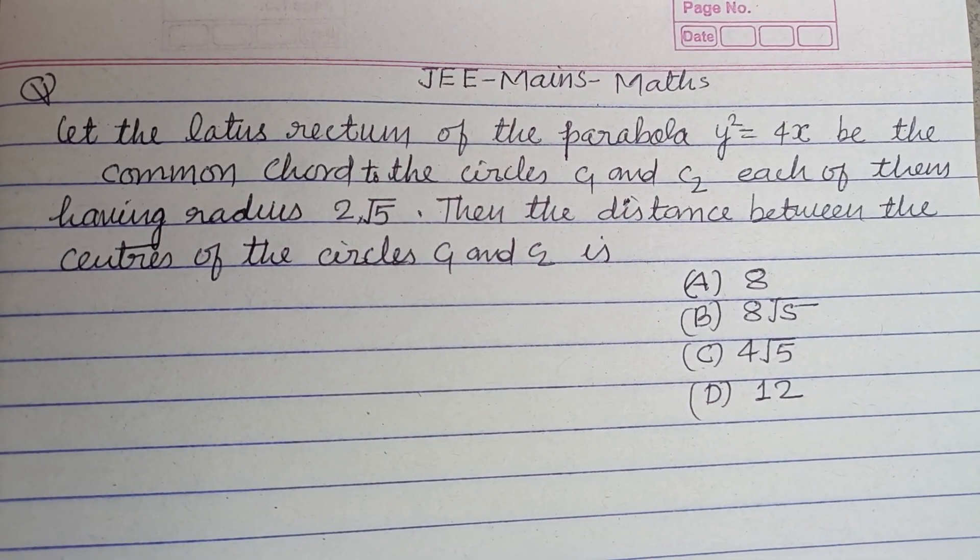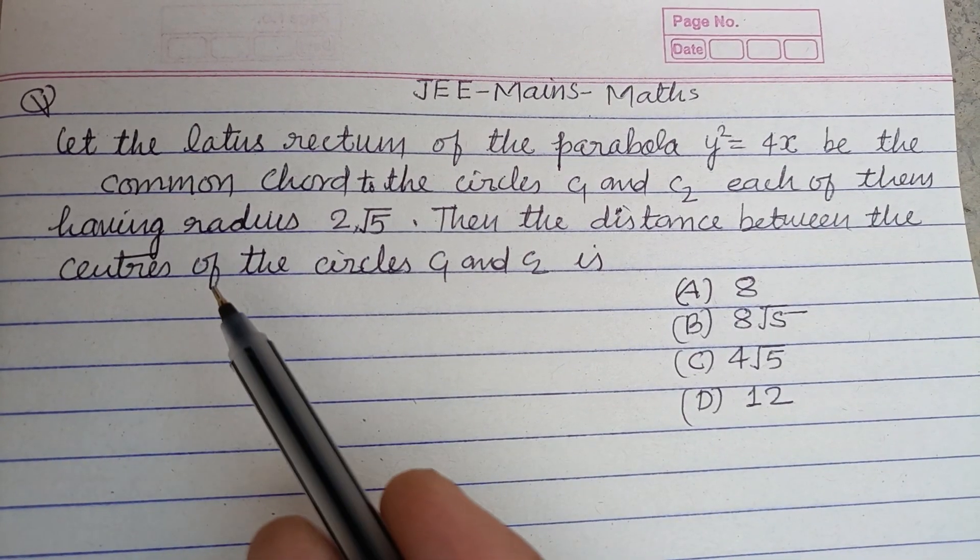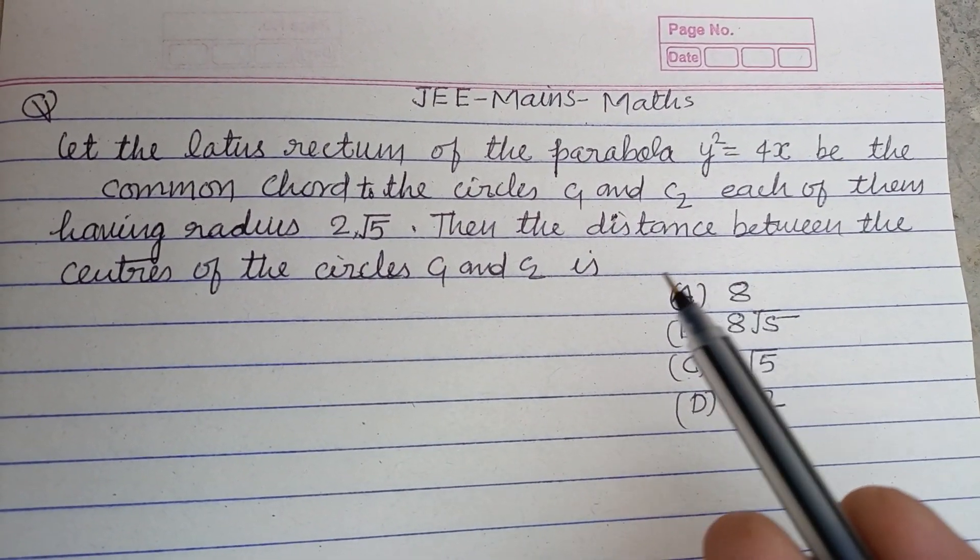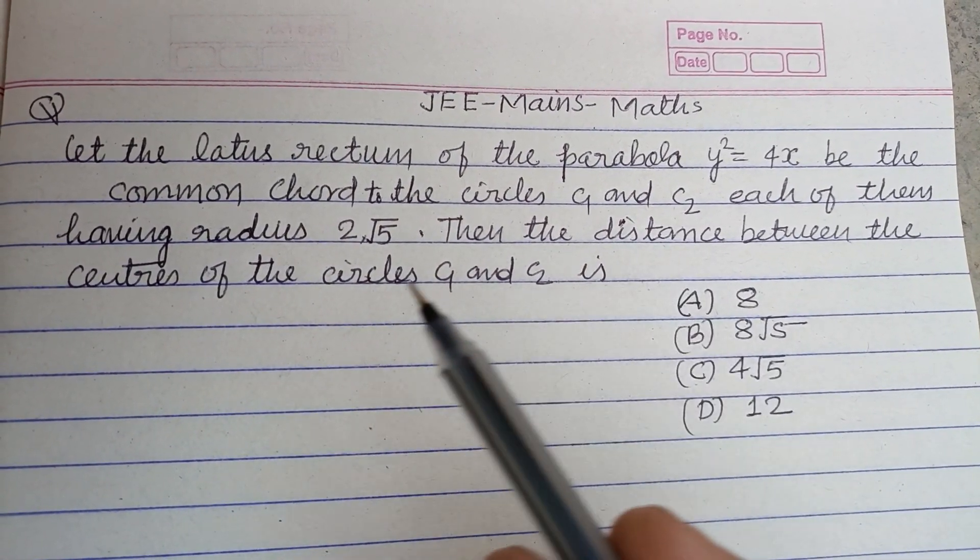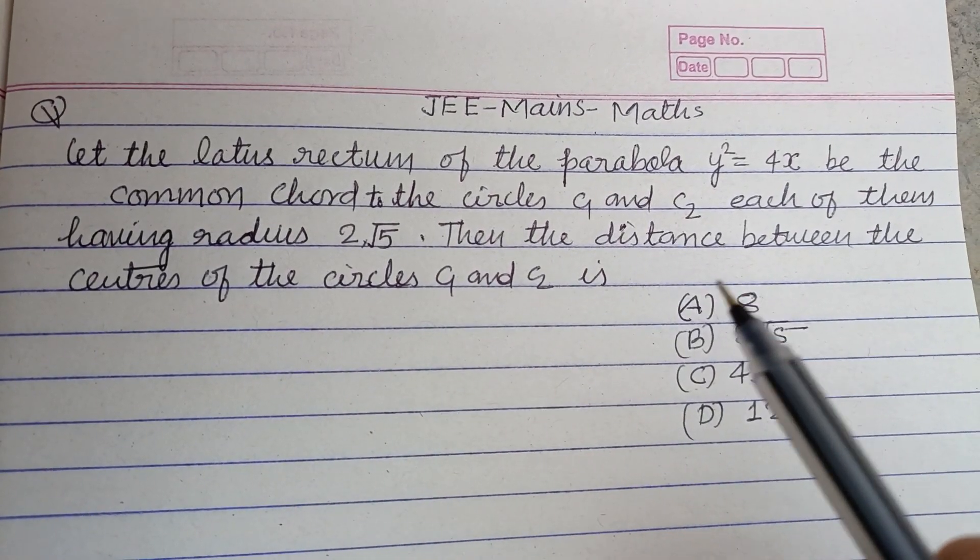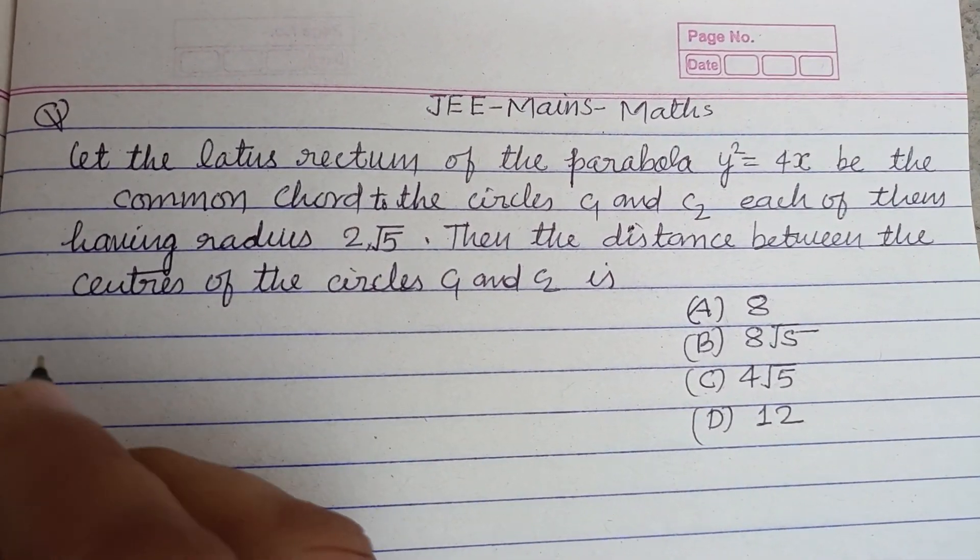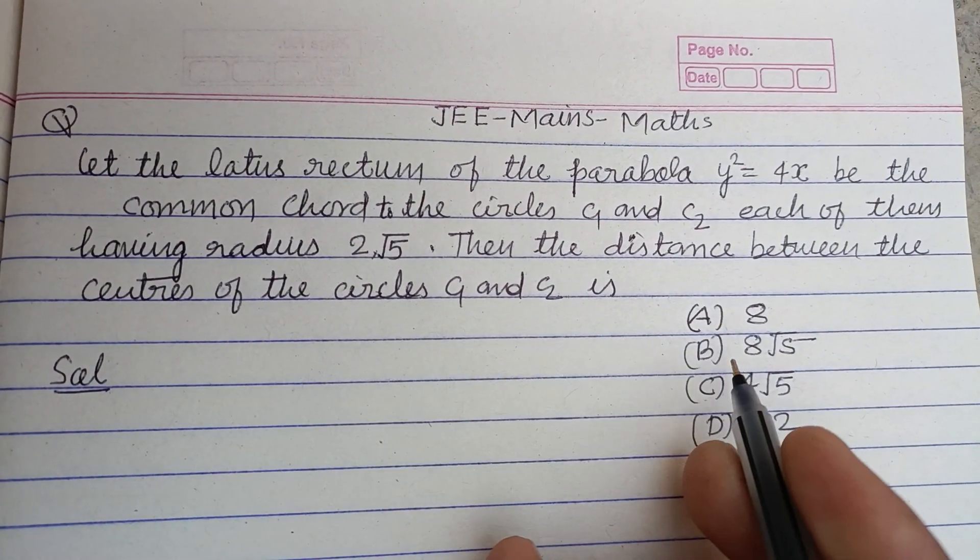Hello viewers, warm welcome to this YouTube channel. Question from JEE Mains: Let the latus rectum of the parabola y² = 4x be the common chord to the circles C1 and C2, each of them having radius 2√5, and the distance between the centers of the circles C1 and C2 is...